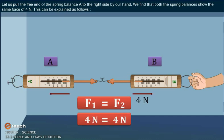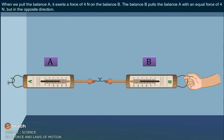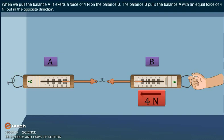This can be explained as follows. When we pull balance A, it exerts a force of 4 Newton on balance B. Balance B pulls balance A with an equal force of 4 Newton, but in the opposite direction.